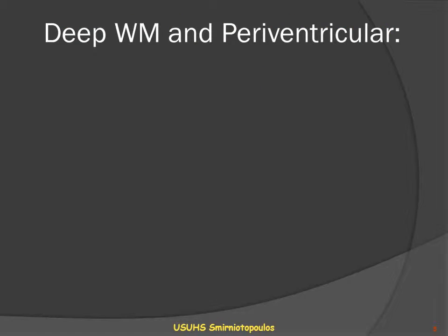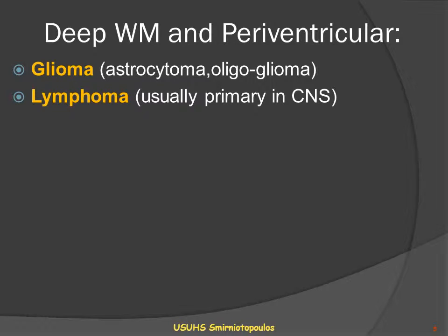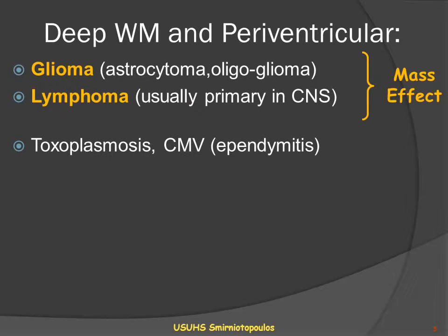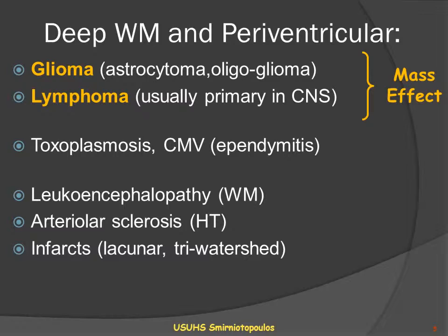Let's think a little bit more about deep white matter and periventricular lesions. Gliomas, astrocytoma, and oligoastrocytoma, and lymphoma — usually primary lymphoma in the central nervous system — are the classic lesions that expand by infiltrating the corpus callosum. Toxoplasmosis and CMV may involve the ependymal lining of the ventricle in the periventricular area, and various types of white matter disease or leukoencephalopathy, small vessel disease or arteriolar sclerosis, and infarcts that may be the result of hypertensive vascular disease may also involve the periventricular region and the corpus callosum. However, these lesions classically are associated with volume loss.